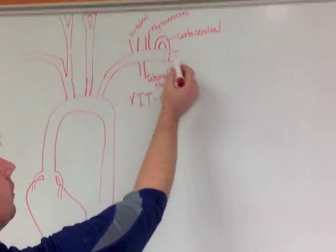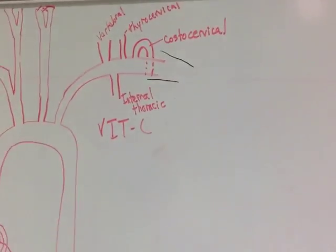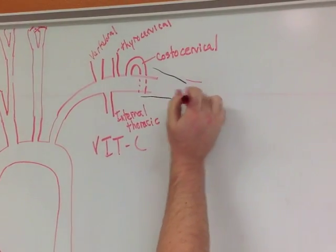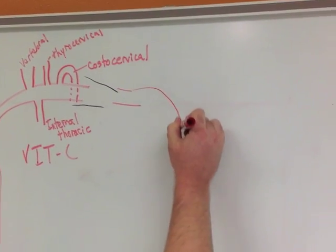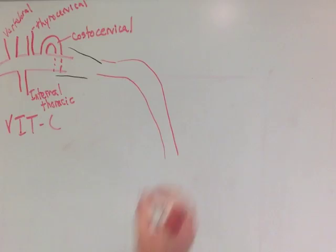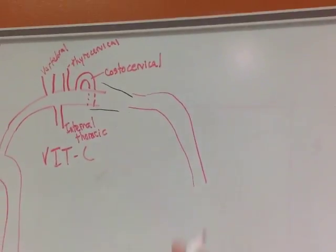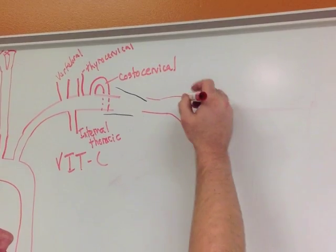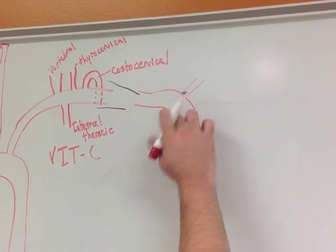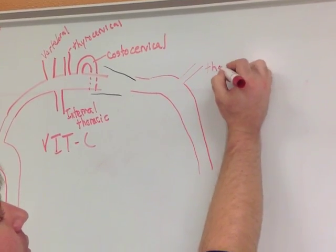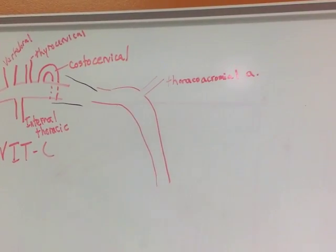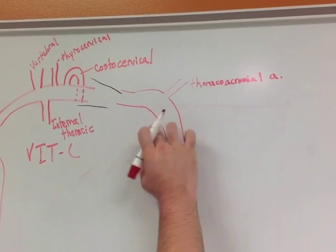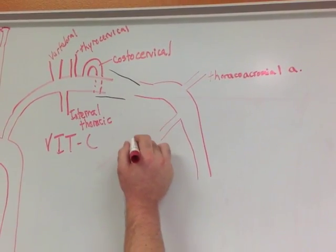So as that subclavian artery passes the clavicle, see our bone, the clavicle coming across, as we pass underneath the clavicle, the subclavian is going to become the axillary artery, and it's going to go to the upper limb. So branches that we'll see off of axillary artery, this is thoracocromial, lateral thoracic,